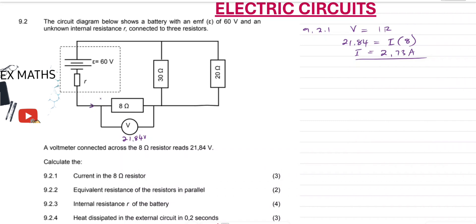This is also the total current of the circuit. The 8 ohm resistor is in series with the rest of the resistors, so it is not going to divide the current. Current will divide across the parallel resistors. So 2.73 A is the total current of our circuit.